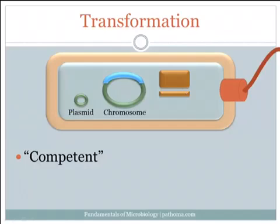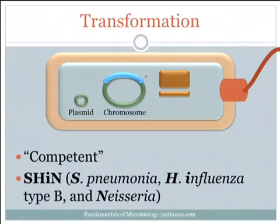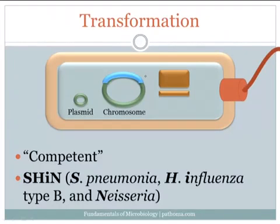This piece of DNA that it just picked up could contain special genes that code for antibiotic resistance, toxins, and other virulence factors. There are three main organisms that can perform transformation, and they are Strep pneumoniae, Haemophilus influenzae type B, and Neisseria.